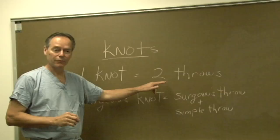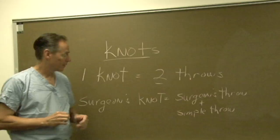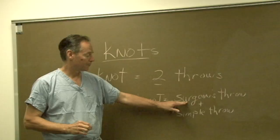In the case of a square knot, it's two simple throws. Whereas a surgeon's knot is comprised of a surgeon's throw and then on top of that it's followed by a simple throw.